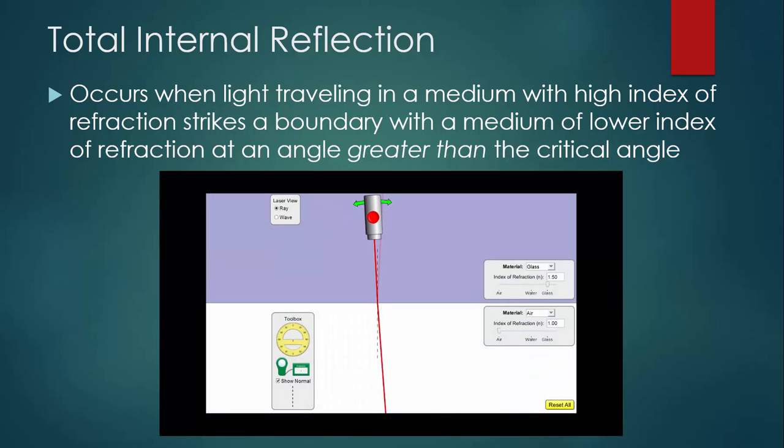You can see in this animation that when the incident angle is small, most of the light is refracted and some of it is reflected. When the angle gets too big and crosses the critical angle, all of the light is reflected, and it's reflected within the material itself internally. So right about there is the critical angle.